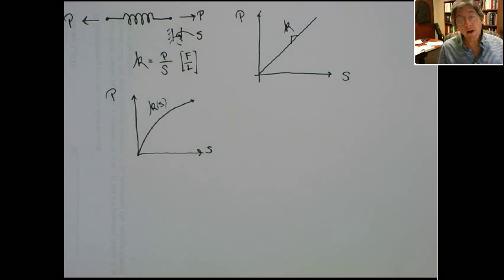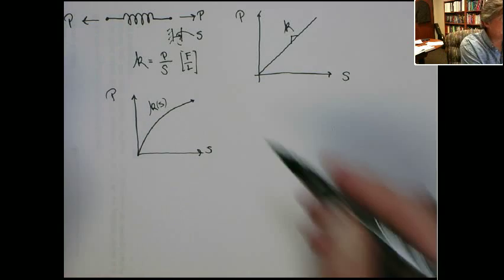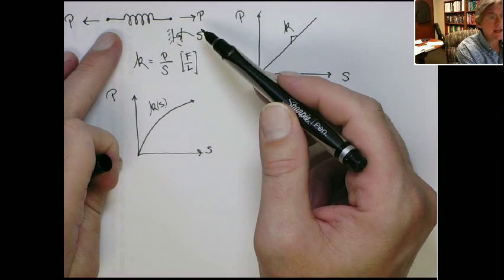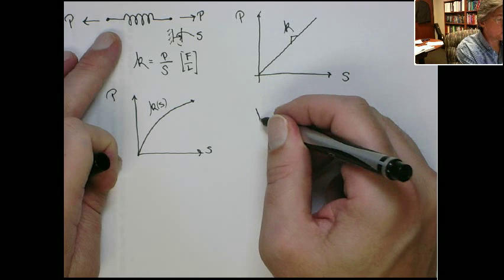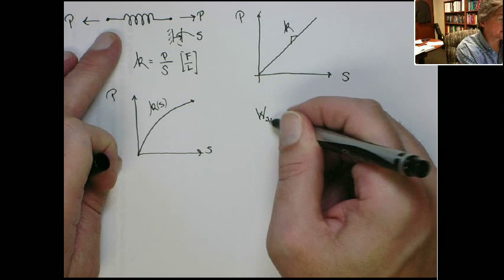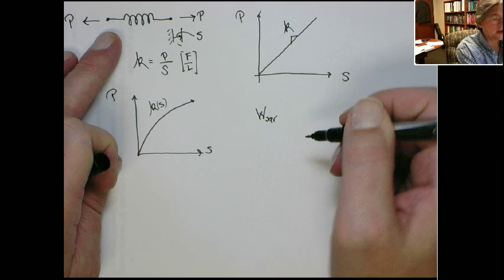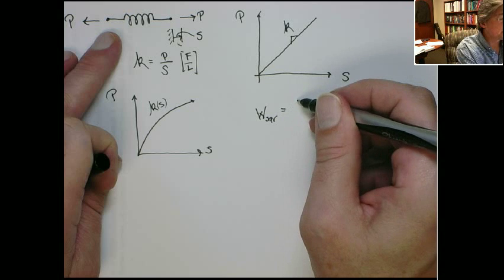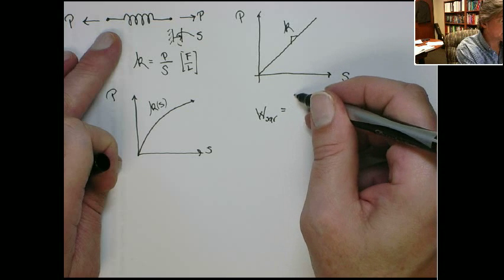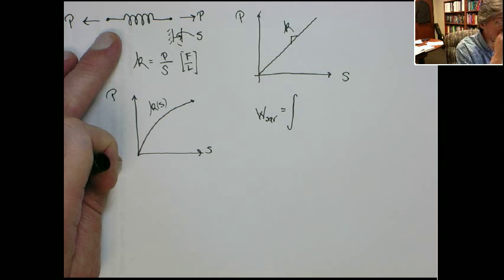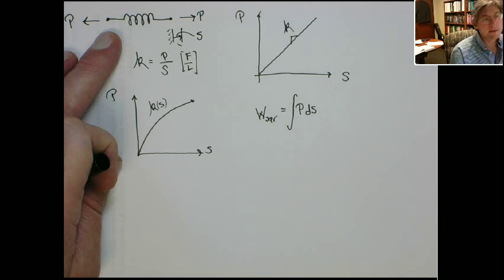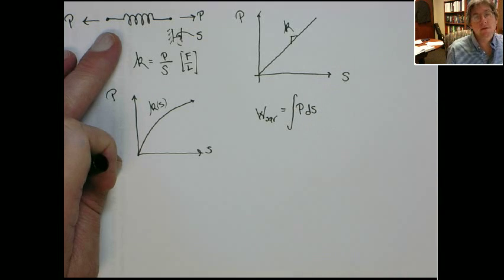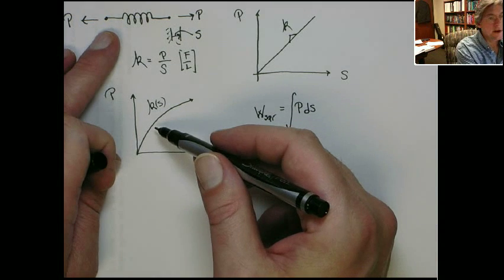Now, the energy associated with the spring — you take this spring, put the force on it, it moves, so the force moves, so there's an amount of work associated with that. The work done on the spring is the force times the distance, or more rigorously, it's the integral of the force over the displacement. This works for both non-linear and linear springs.